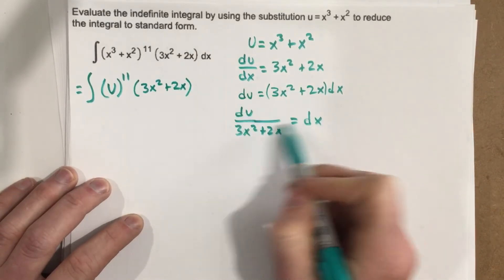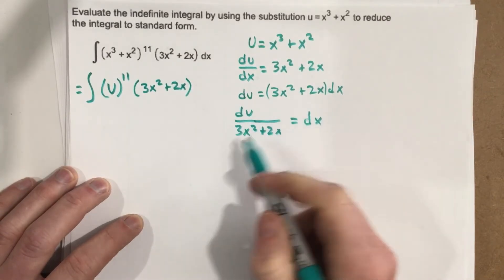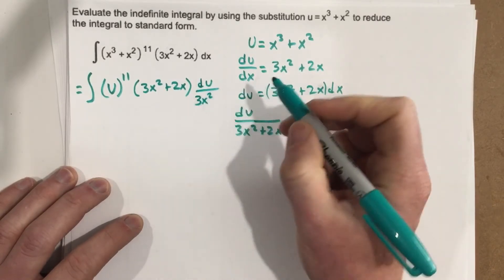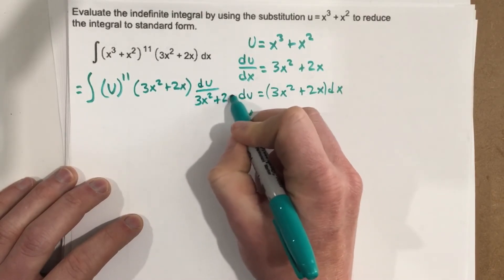And then when we substitute this stuff in for dx, we get du over 3x squared plus 2x.